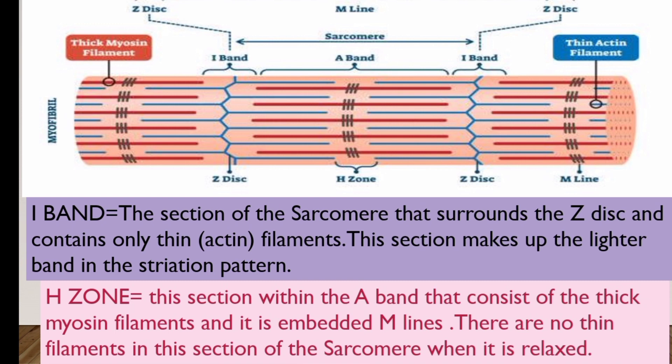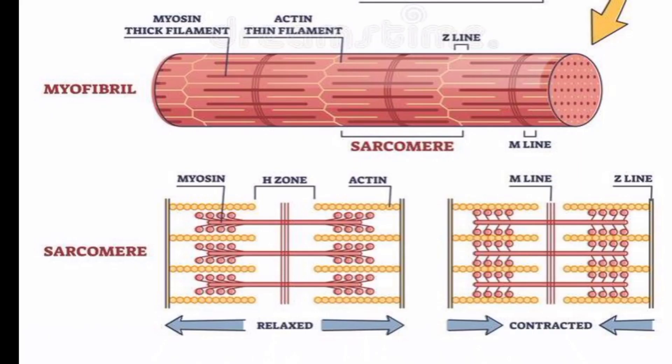The H-zone is the section within the A-band that consists of only the thick myosin filament and the embedded M-lines. The thick myosin filament and M-lines together make up the H-zone.